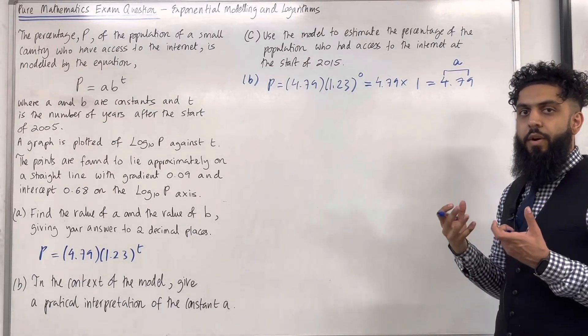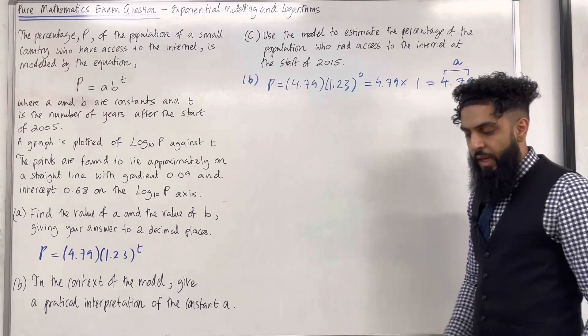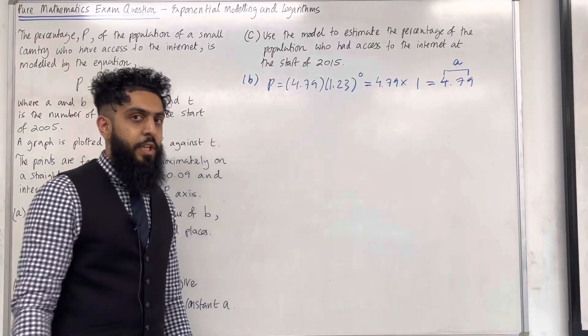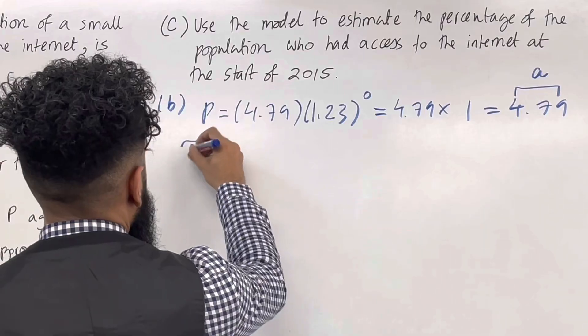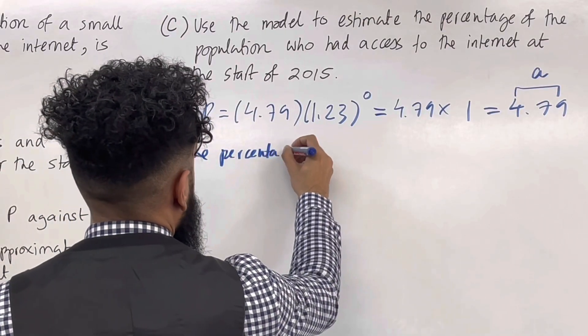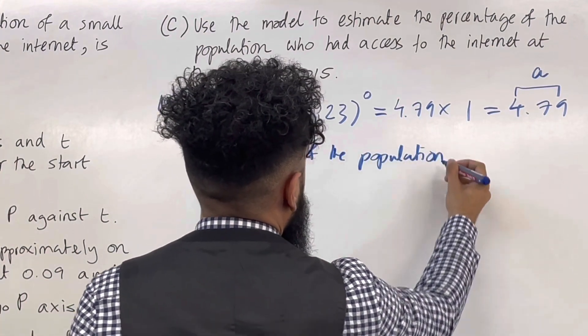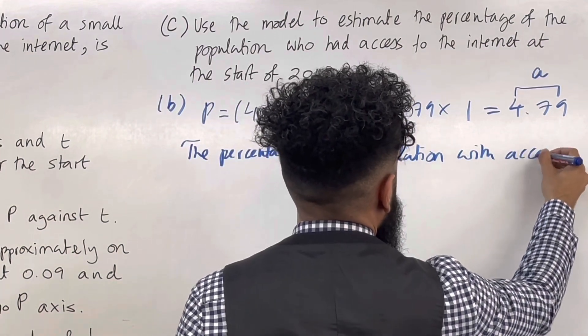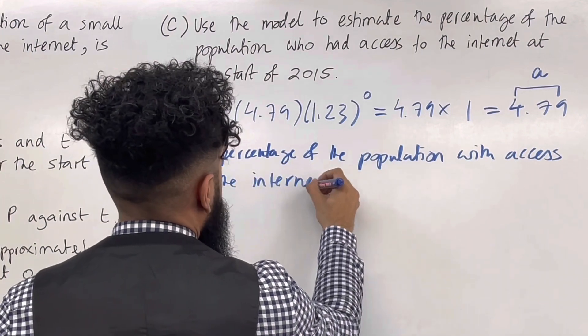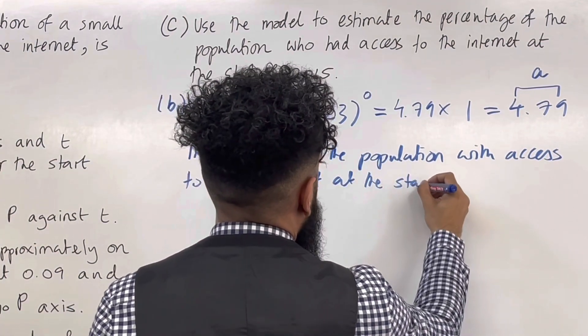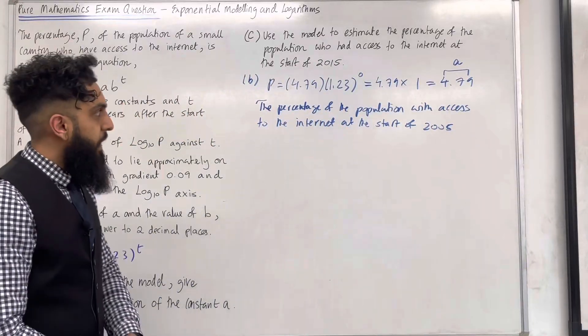Hence I get 4.79. Now the 4.79 is my A. So what is the interpretation of A in context? We're looking at initial because we've substituted T equals 0. In other words, we're looking at the initial population percentage. I can write down: it is the percentage of the population with access to the internet at the start of 2005. So that completes part B of the question.